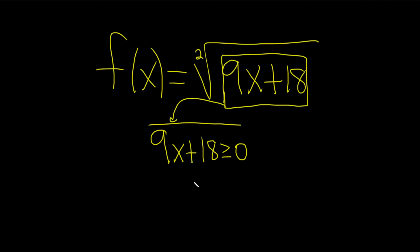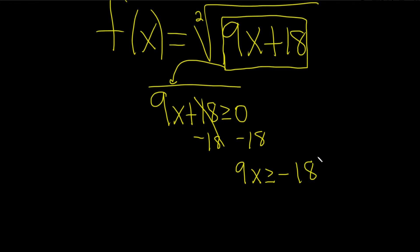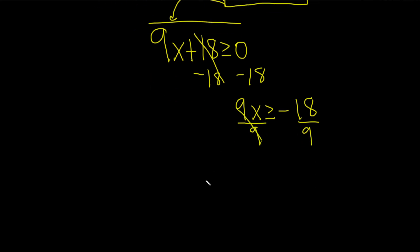So now we just have to solve for x. Let's subtract 18, so minus 18, minus 18. So we have 9x greater than or equal to negative 18. And now x is being multiplied by 9, so we'll divide by 9. So that gives us x greater than or equal to negative 2.